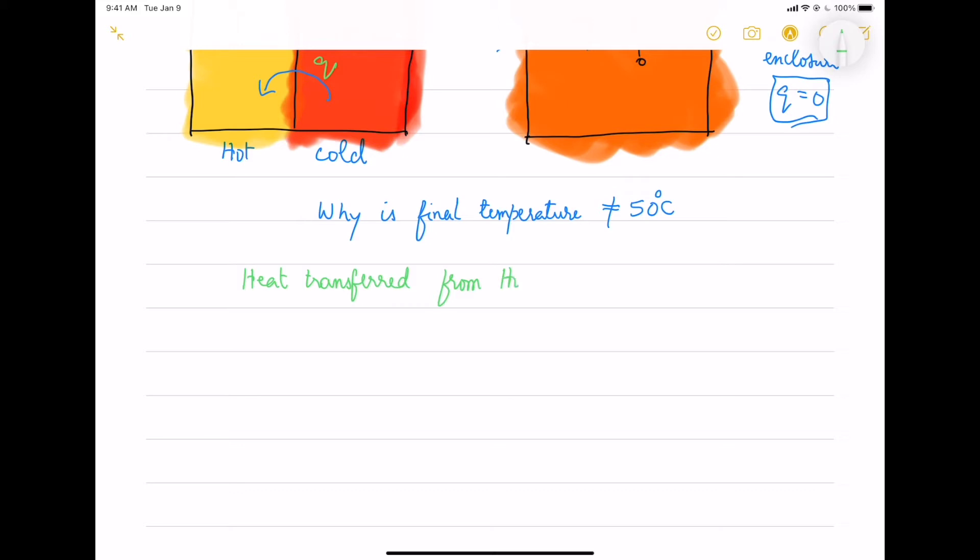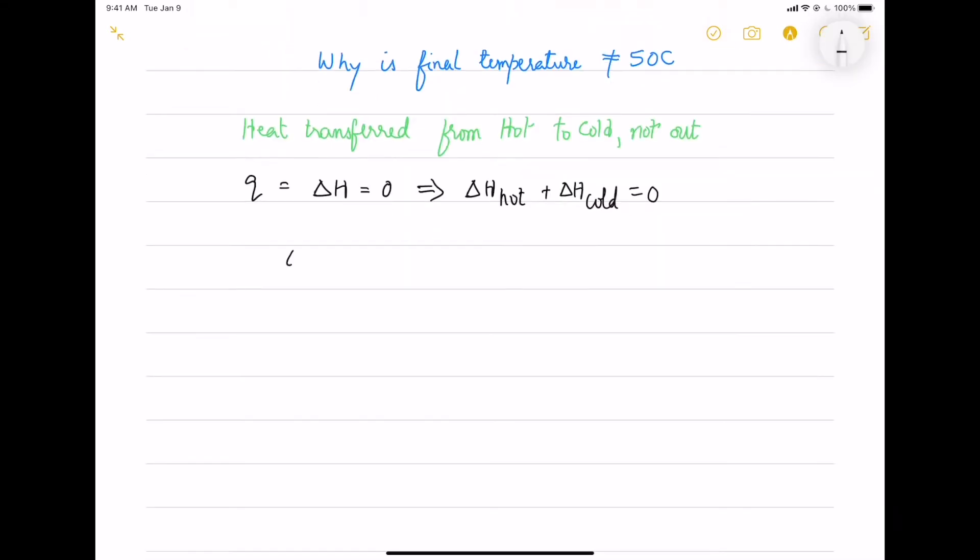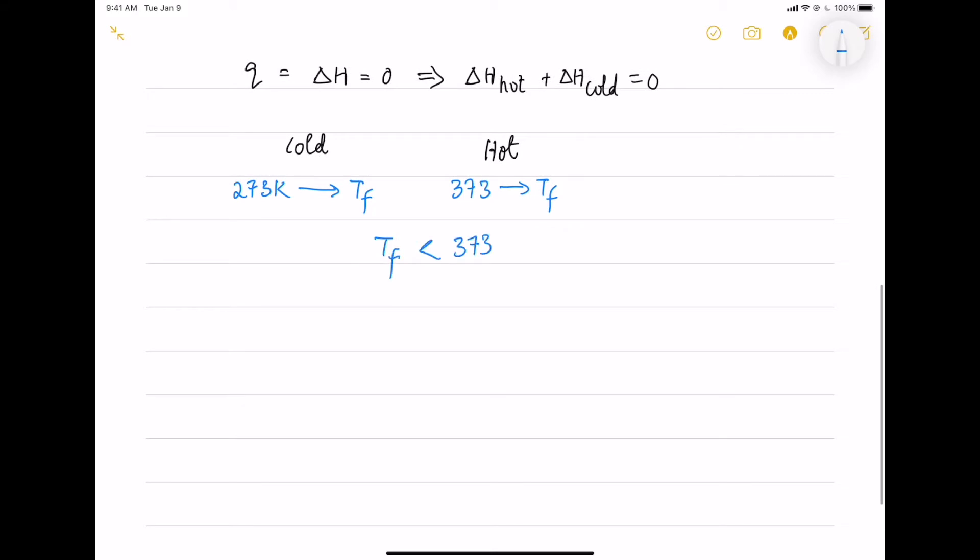There is heat transferred from hot to cold, not out. The Q can be written as delta H hot plus delta H cold, the change in heat in hot and cold. Let's take the final temperature to be between 373 and 273 Kelvin.